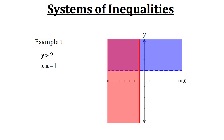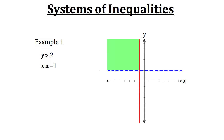Now we have our two inequalities from our system on the same graph. For our first inequality, we have the shaded region above the line y equals 2. For our second inequality, we have the shaded region to the left of the line x equals negative 1. There's an area in the second quadrant where the regions overlap — that's where our solution is. For the system to be consistent, both conditions must be true, so we're left with just this green region. The solution can also lie along the red line as long as it stays above y equals 2, but no points along the dotted y equals 2 line are part of the solution.